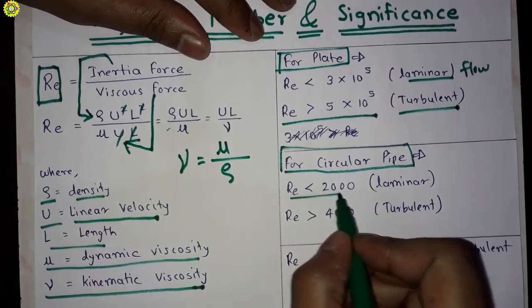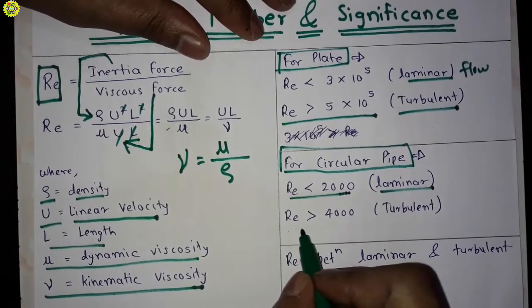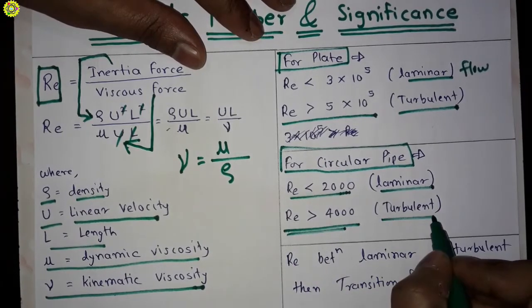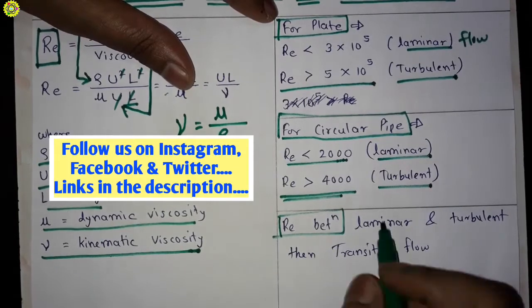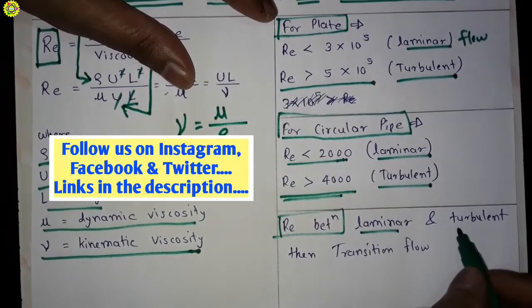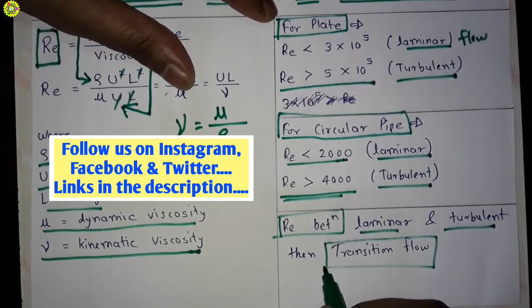If Reynolds number is greater than 4000, then it is turbulent flow. Further, if Reynolds number is in between laminar and turbulent flow, then it is a transition flow.